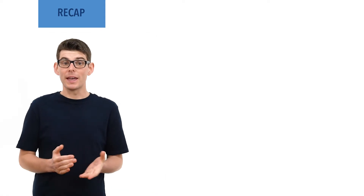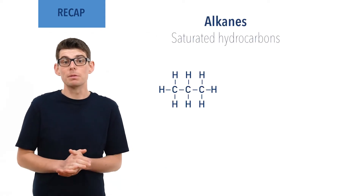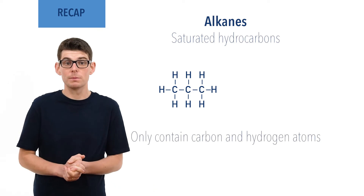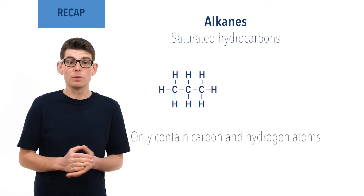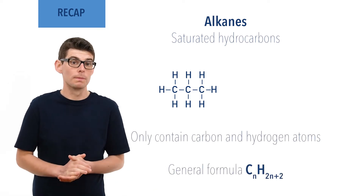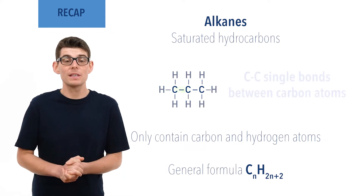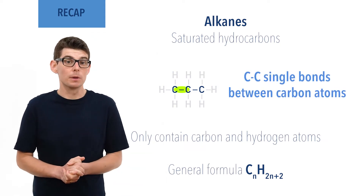Before we talk in detail about the reaction and mechanism steps, there are a few essential ideas you need to be comfortable with. Alkanes are a type of saturated hydrocarbon made up of only carbon and hydrogen atoms with the general formula CnH2n+2. All carbon atoms in an alkane molecule are held together by single covalent bonds.